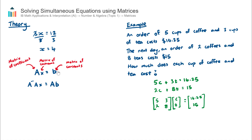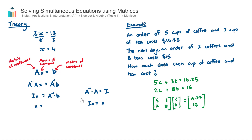To recap: since we cannot divide two matrices, we pre-multiply both sides by the inverse of A. The reason is that A⁻¹ multiplied by A equals the identity matrix. So the next line becomes: the identity matrix multiplied by the matrix of unknowns, which equals A⁻¹ multiplied by B. The identity matrix acts like the digit one in matrix arithmetic, so the identity matrix times x is simply x. Therefore, the matrix of unknowns equals A⁻¹ multiplied by B.